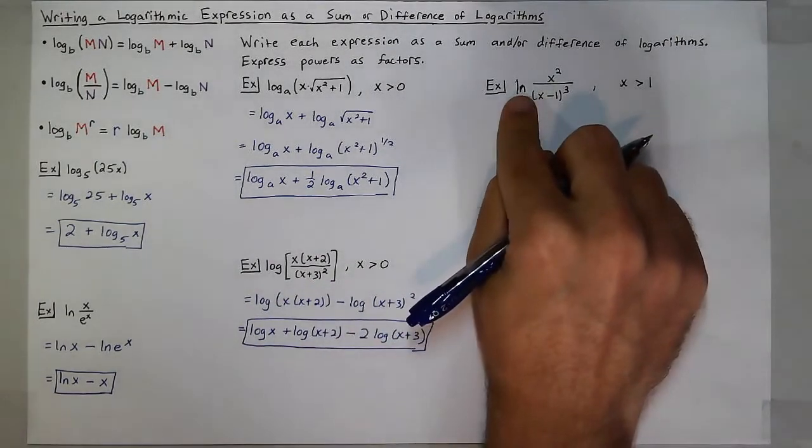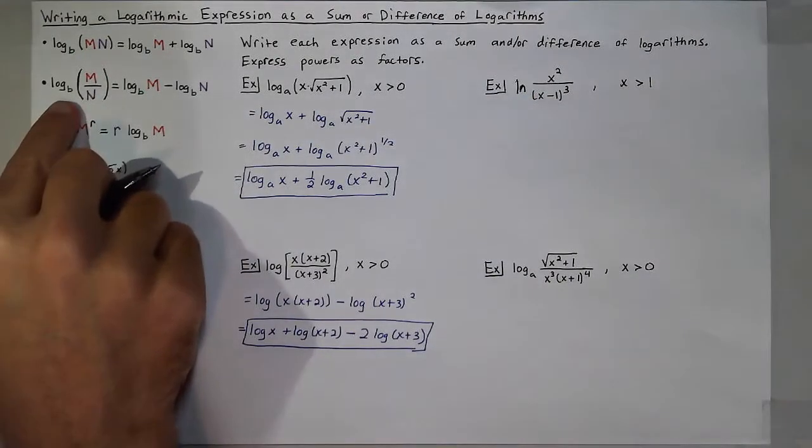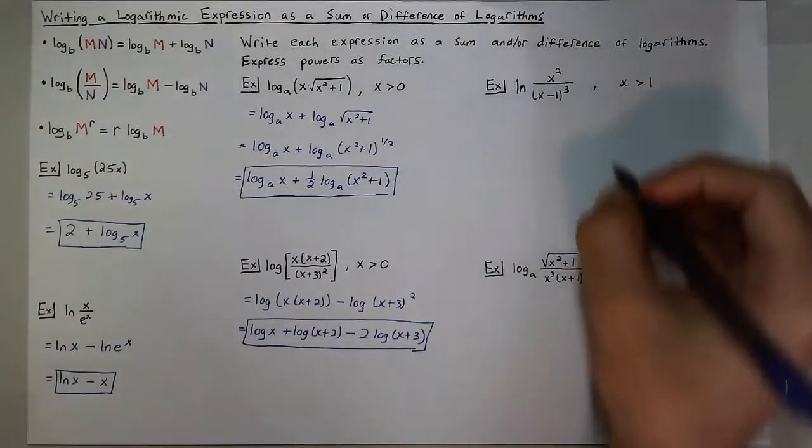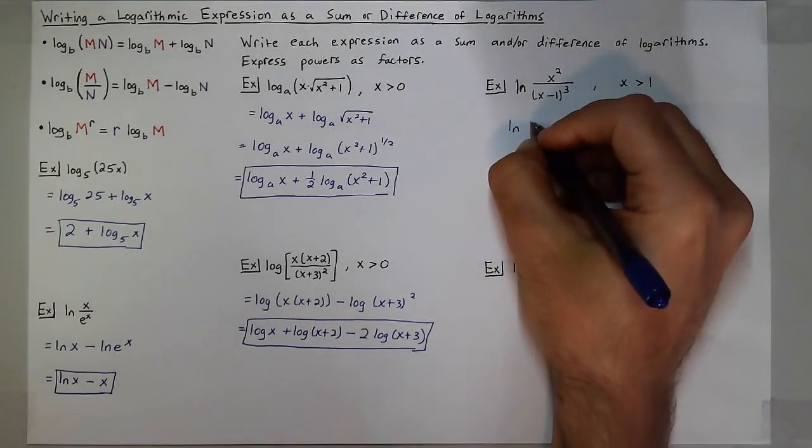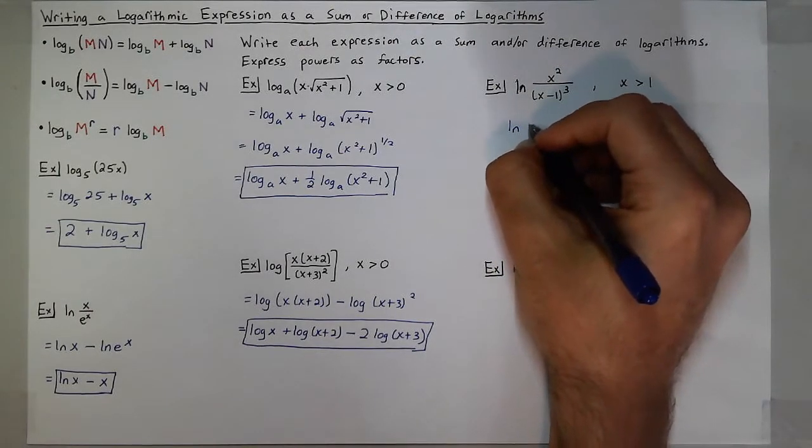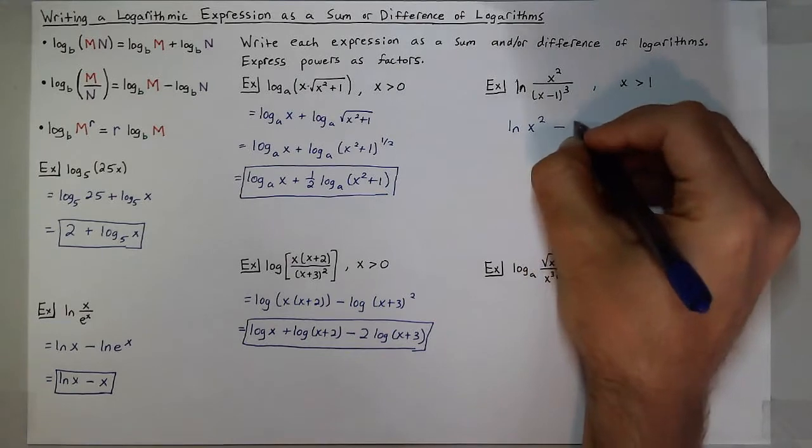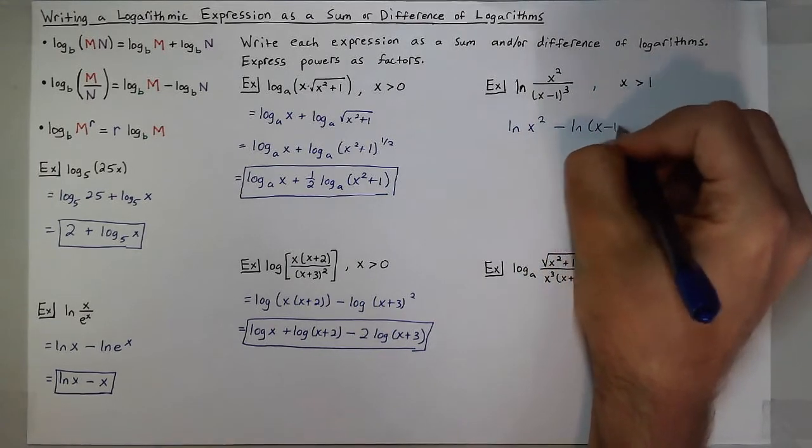Up here, I have a natural log, but the properties still work the same. It's just log base e, just like you saw over here. I have division, so this becomes natural log of x squared minus the natural log of x minus 1 cubed.